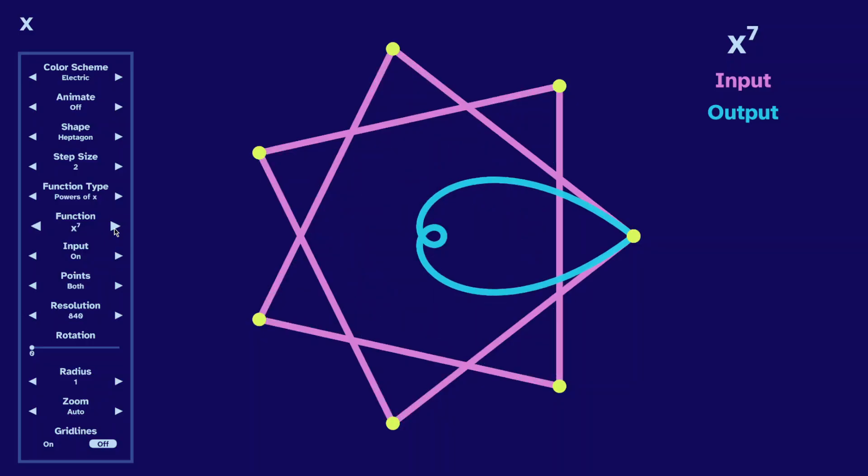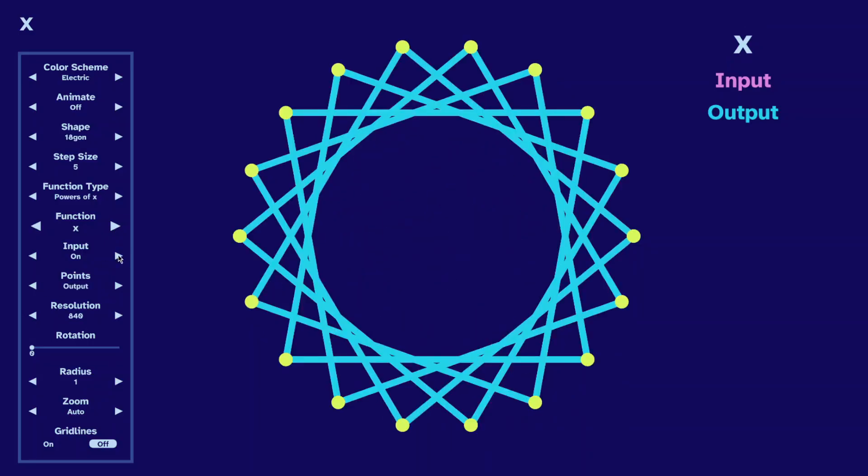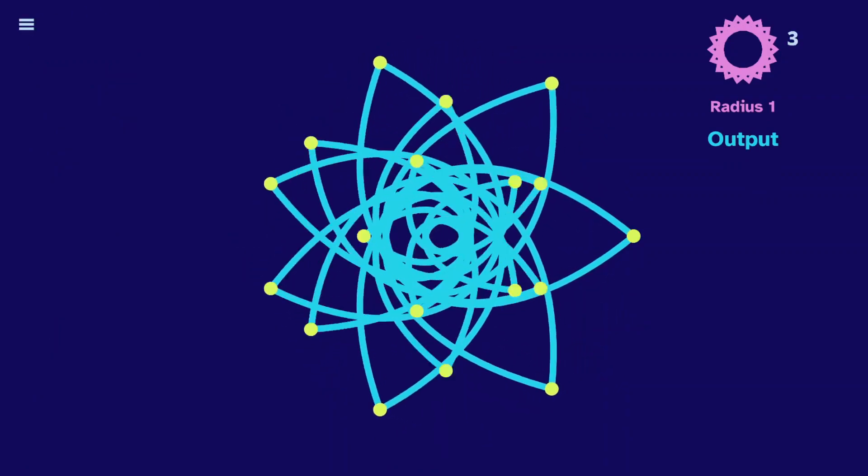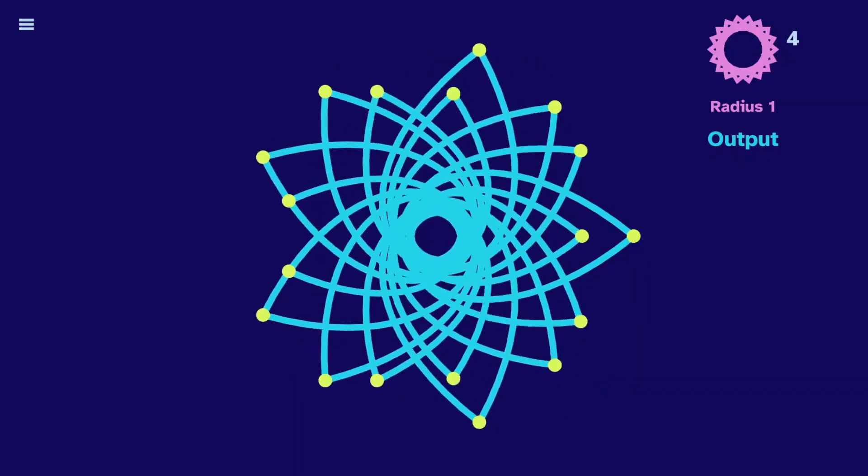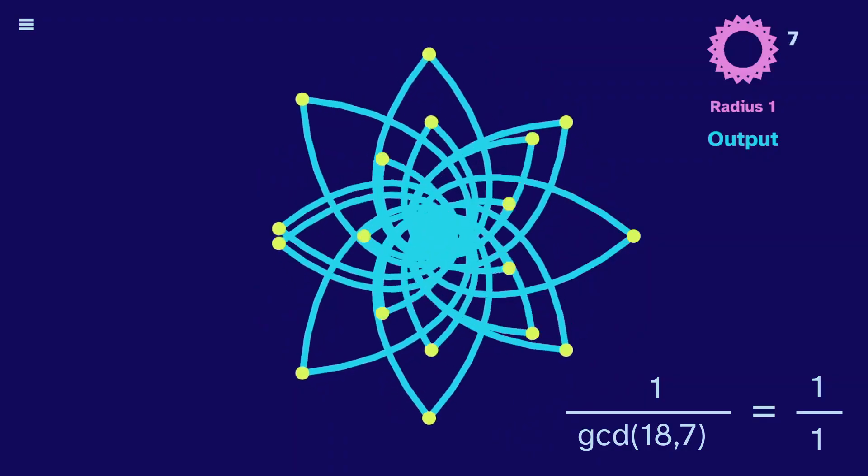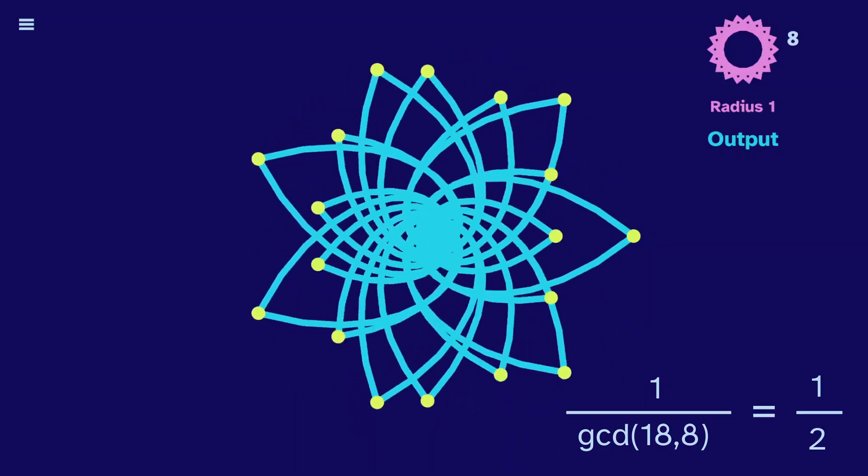Now let's try a composite number of points, like this 18-pointed star. Squared it hits half the points, and cubed it hits a third of them. The proportion of points that get hit is 1 over the greatest common divisor of 18 and the power.